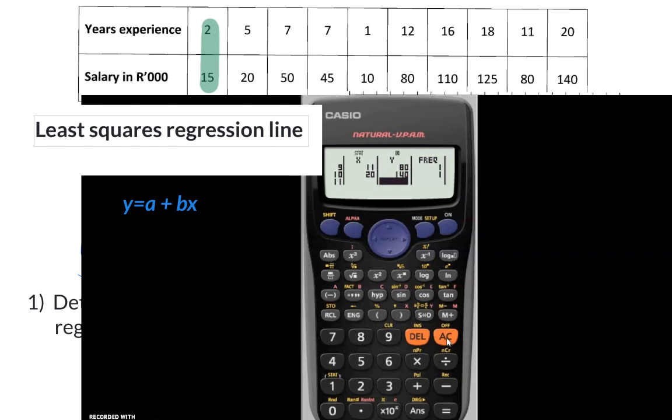Now that all the data has been entered into the calculator, I can press AC, and then I need to go to my stats option at 1, so I press shift and 1.